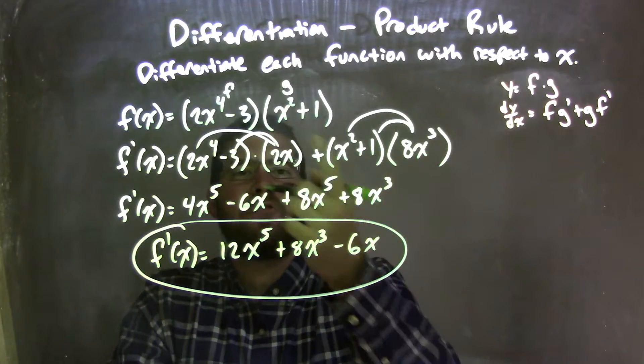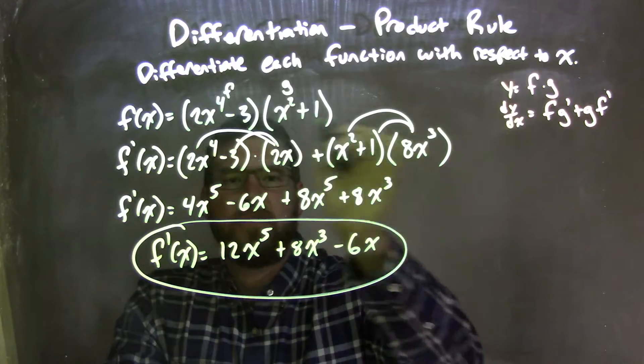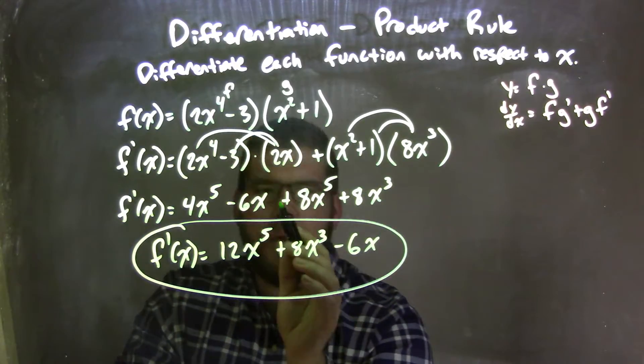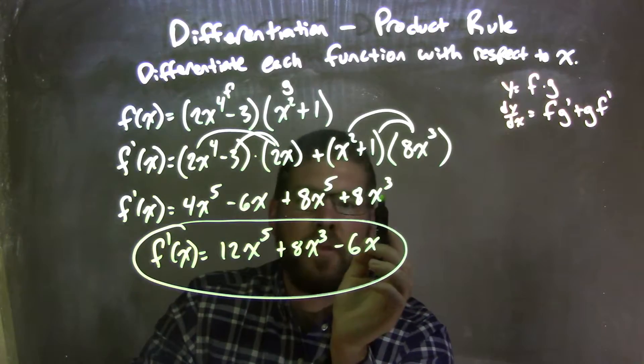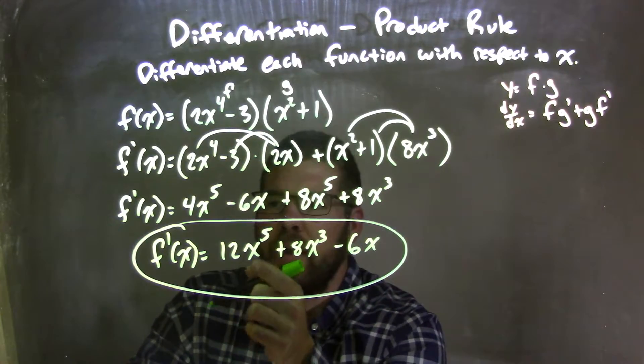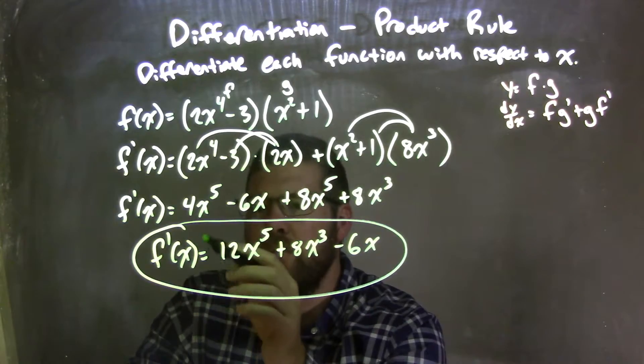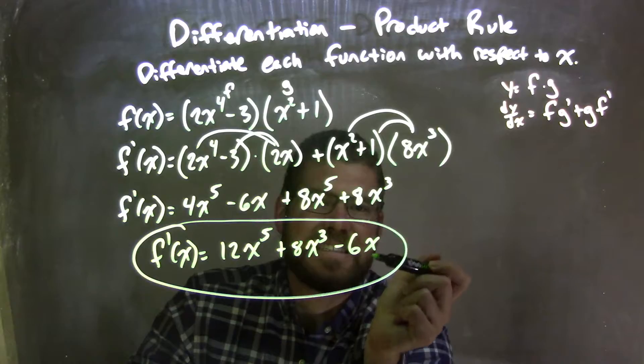And then from there, we distributed out our multiplication. So right here, we had the derivative. Then we distributed it out and simplified to get this, 4x to the 5th minus 6x plus 8x to the 5th plus 8x to the 3rd. We simplified again and reordered to have our highest degrees first to give us our final derivative here, our final answer, f prime of x is equal to 12x to the 5th plus 8x to the 3rd minus 6x.